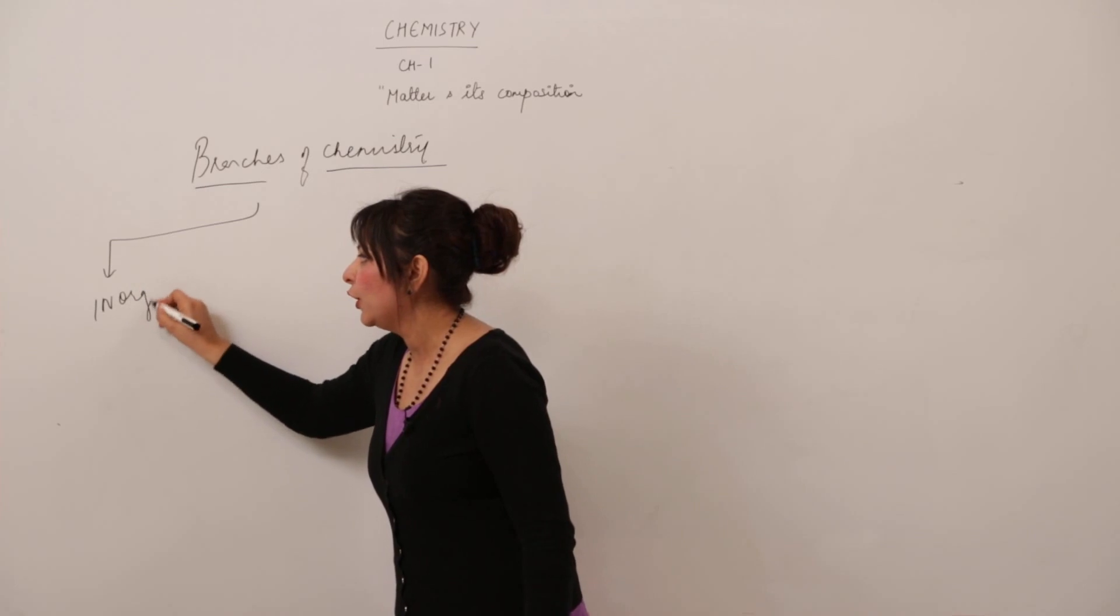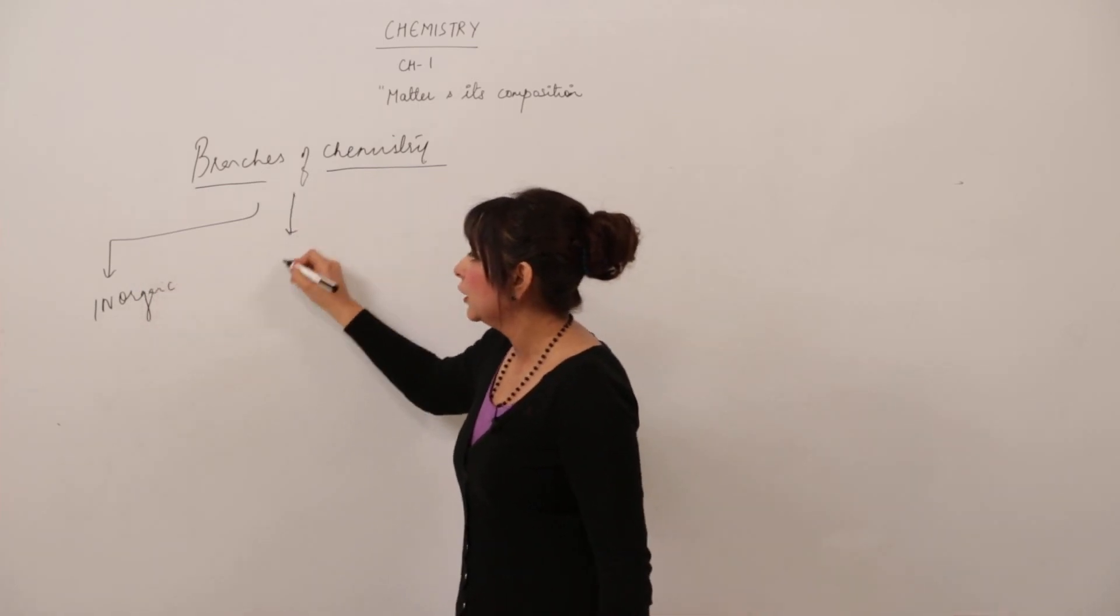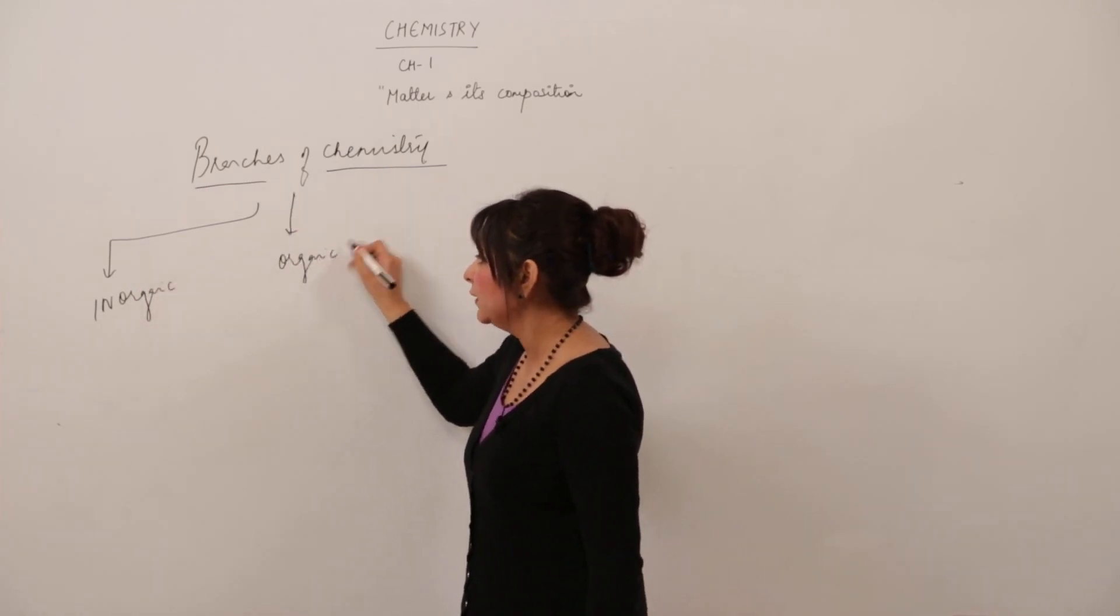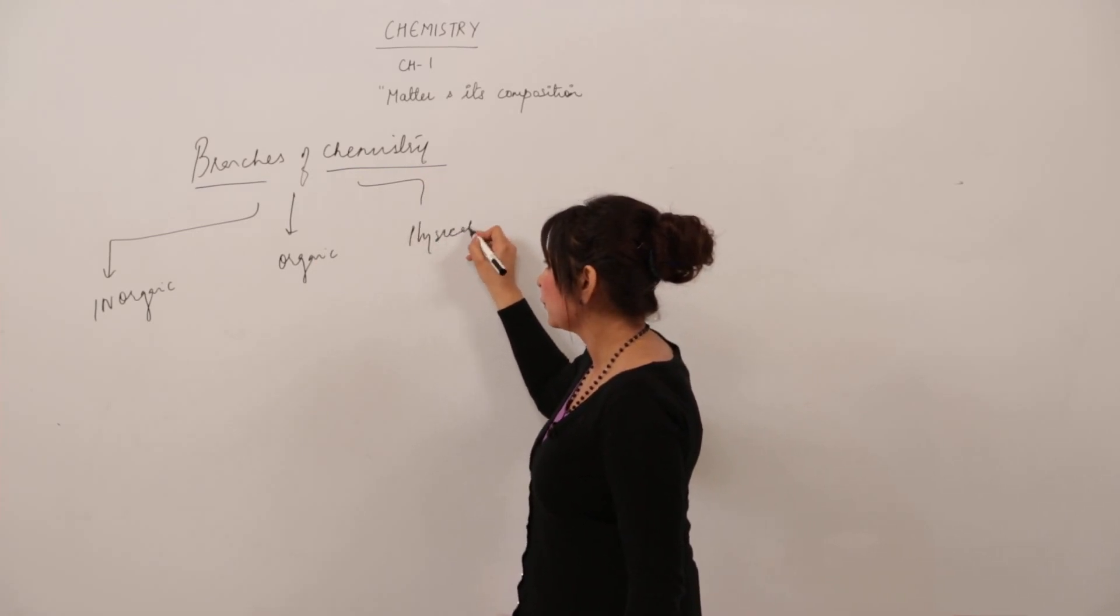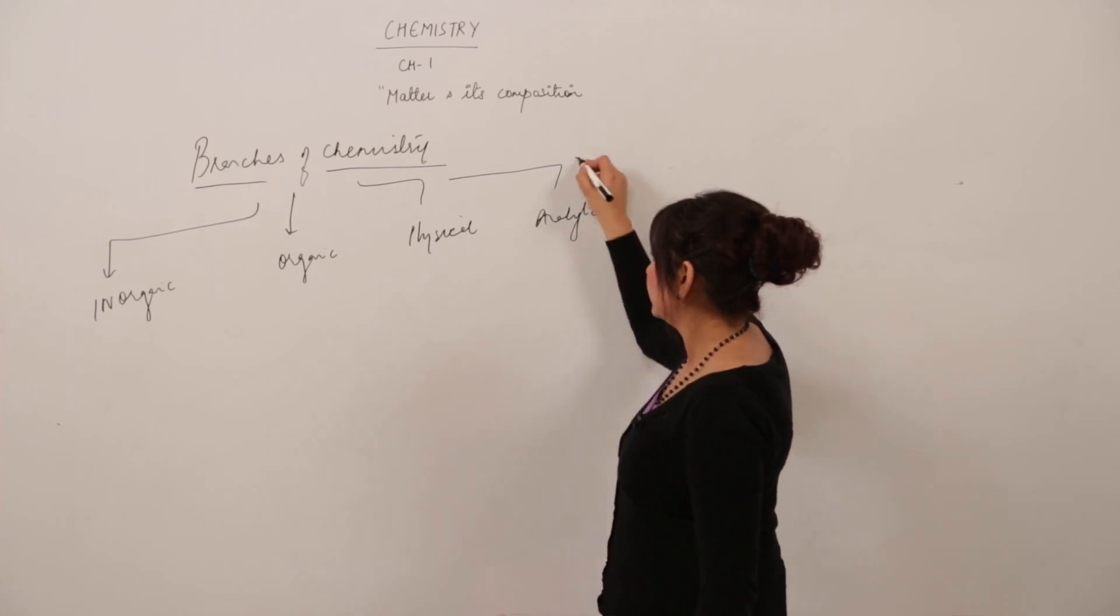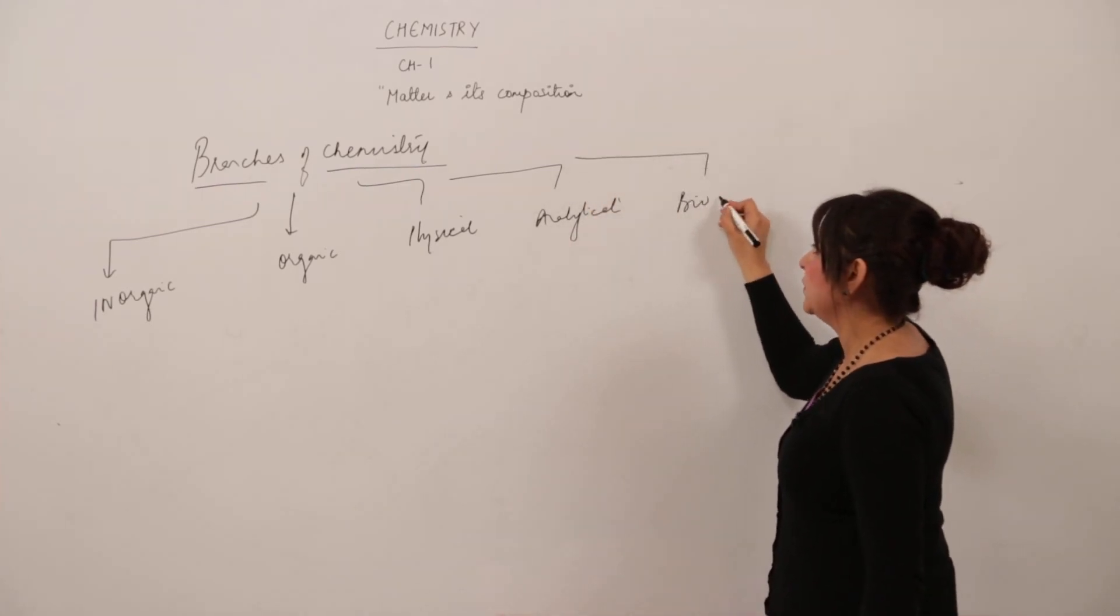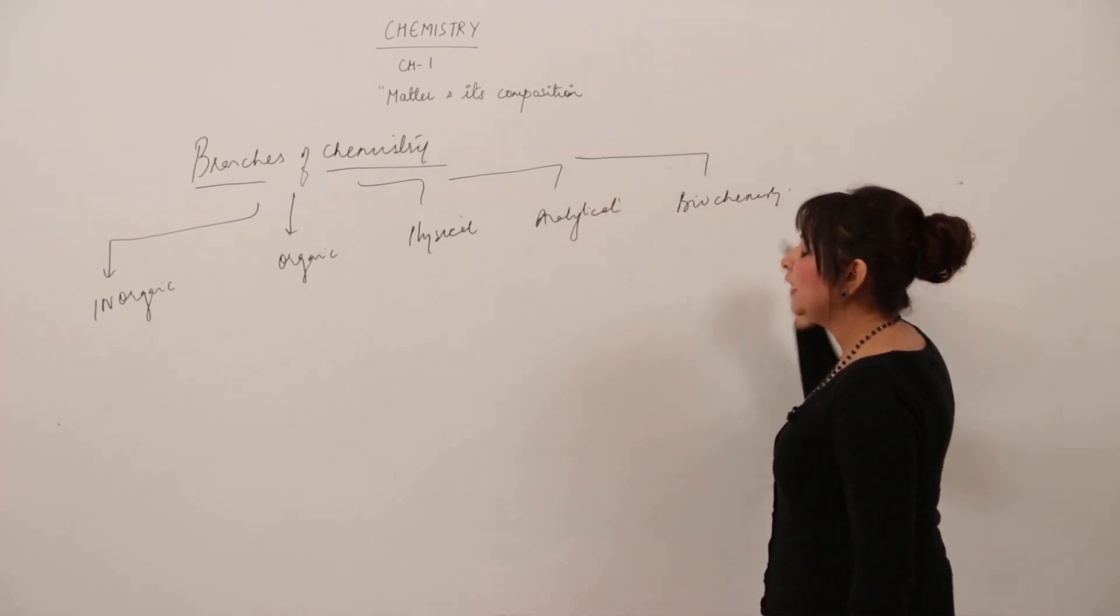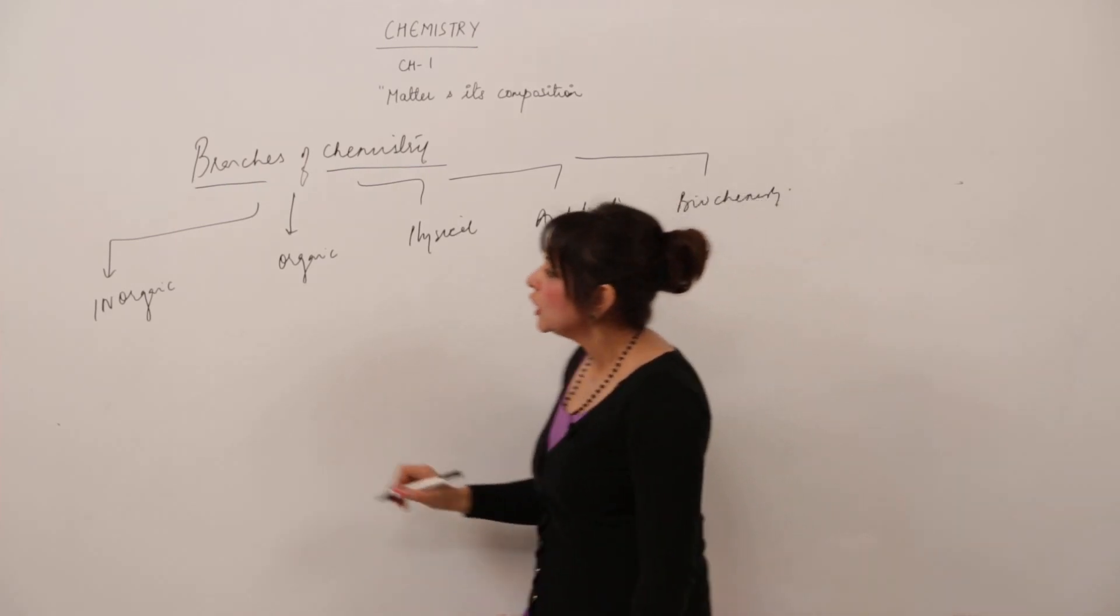It is divided into inorganic chemistry, organic chemistry, physical chemistry, analytical chemistry, and biochemistry. Now what are these branches exactly?